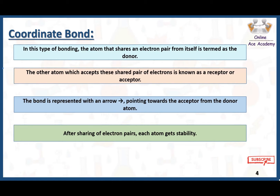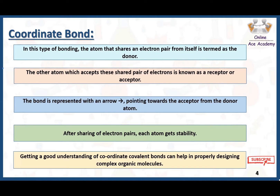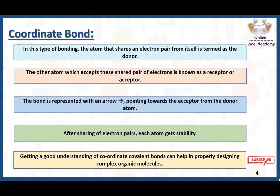Everything in this universe wants to get stable. That's why atoms react with each other — they share, they donate, they transfer their electrons with other atoms in order to get stable. Getting a good understanding of coordinate covalent bonds helps in properly designing complex organic molecules and is very important for understanding coordination chemistry.